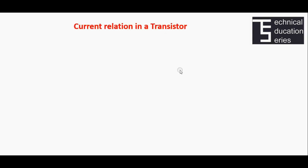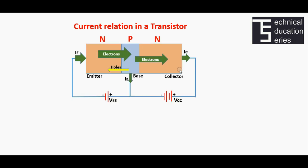Current relation in a transistor. When the emitter junction of the transistor is forward biased, majority charge carriers diffuse across the junction. In the case of an NPN transistor, these majority carriers include electrons traveling from emitter to base and holes passing from base to emitter. The total sum of these charge carrier movements constitutes the emitter current IE, which is the sum of the electron current from emitter to base and the hole current from base to emitter.